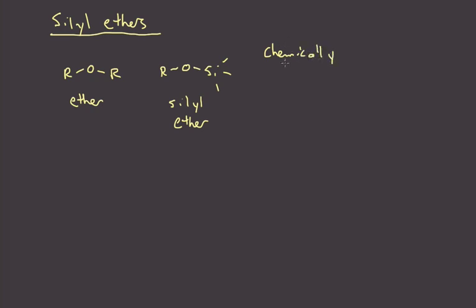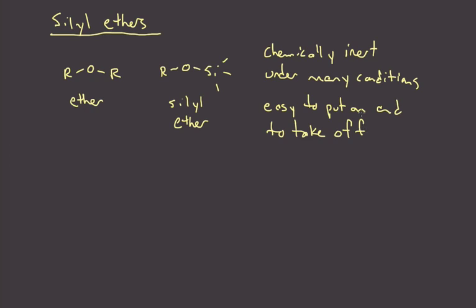This actually turns out to be a very useful protecting group because it's basically, as most ethers are, chemically inert under many conditions. It obviously can't be under all conditions, or else we wouldn't be able to remove it at the end of the day. But for the most part, it's going to protect that oxygen from doing a lot of chemistry that we wouldn't want it to do. In addition to being chemically inert, it's also relatively easy to put on and, equally important, to take off. If putting on a protecting group or taking off a protecting group are too hard, that's not going to be as useful as something that you can put on under simple conditions and then take off. Silyl ethers pretty much fit the bill.